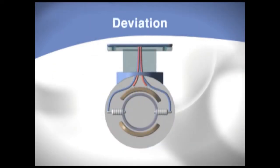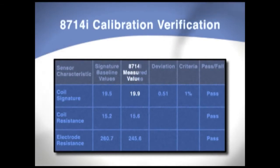Any shift in the meter's calibration will show up as a shift in the magnetic signature values and be detected by the 8714I. If this happens, the diagnostic will notify you to recalibrate the meter.